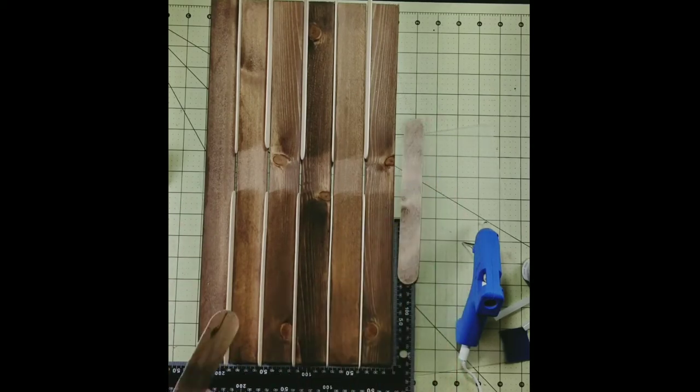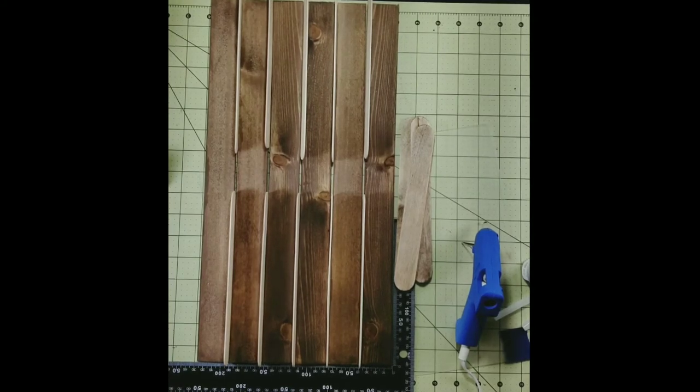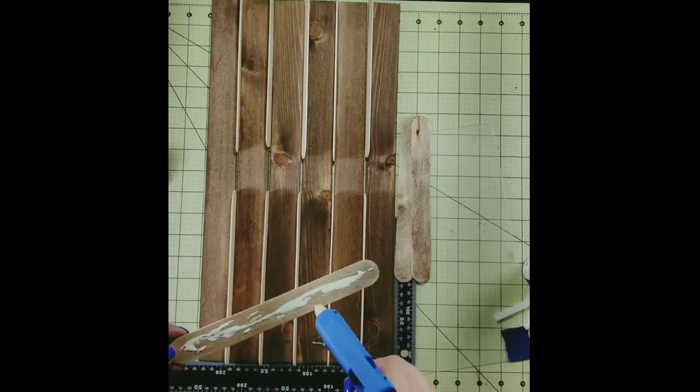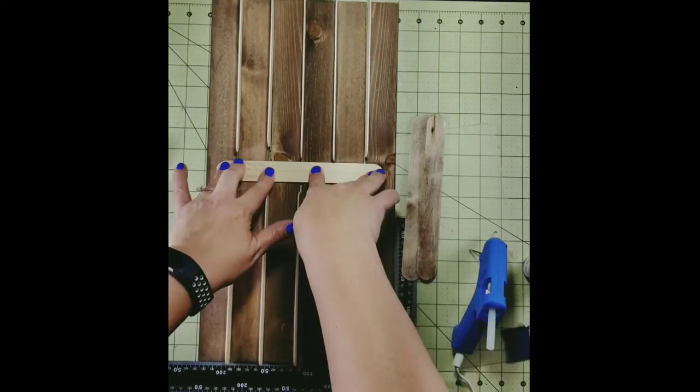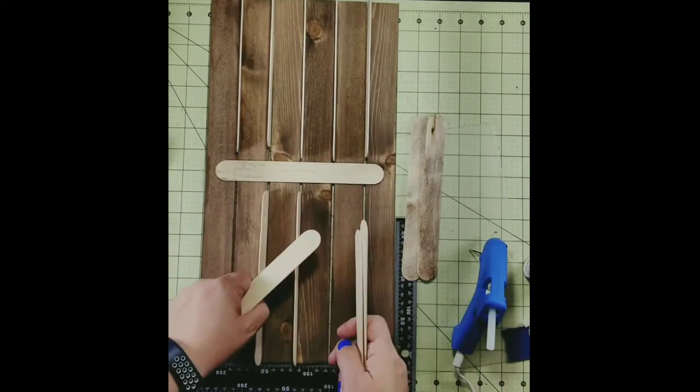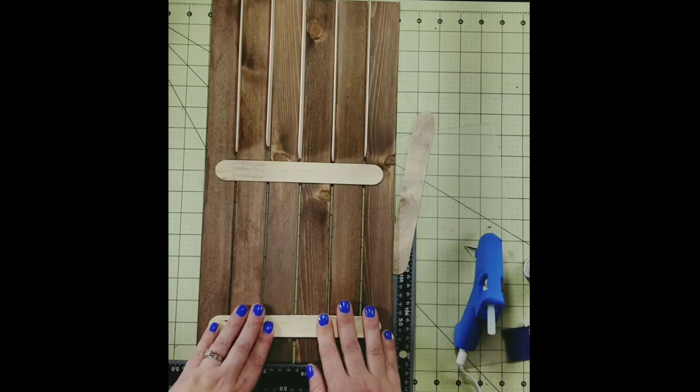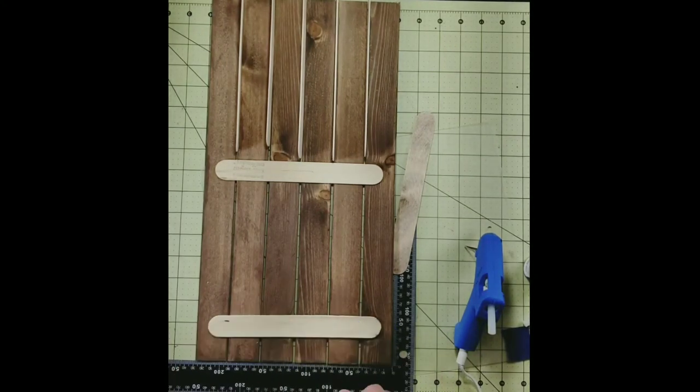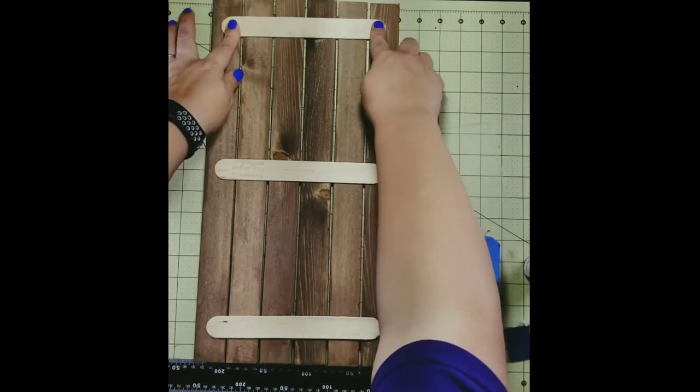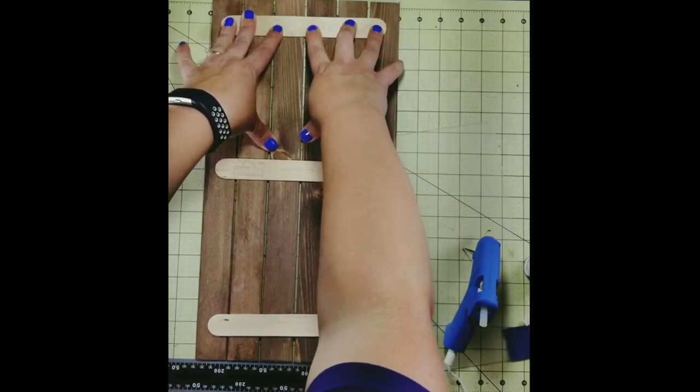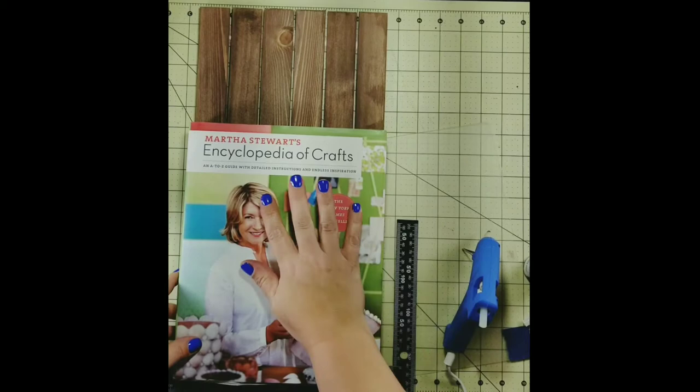I laid all six of my stir sticks out and then I placed one jumbo craft stick in between each of those stir sticks to create a small space. Next, I'm going to take my Gorilla wood glue and my hot glue and I'm going to place both onto one of those jumbo craft sticks and I'm going to place it in the middle so that it touches each one of those stir sticks. The reason I'm using wood glue and hot glue is because the hot glue will hold immediately and then the wood glue will hold the piece together more permanently long term. I'm going to flip this over and add some heavier items to the top to secure it until it's completely dry.